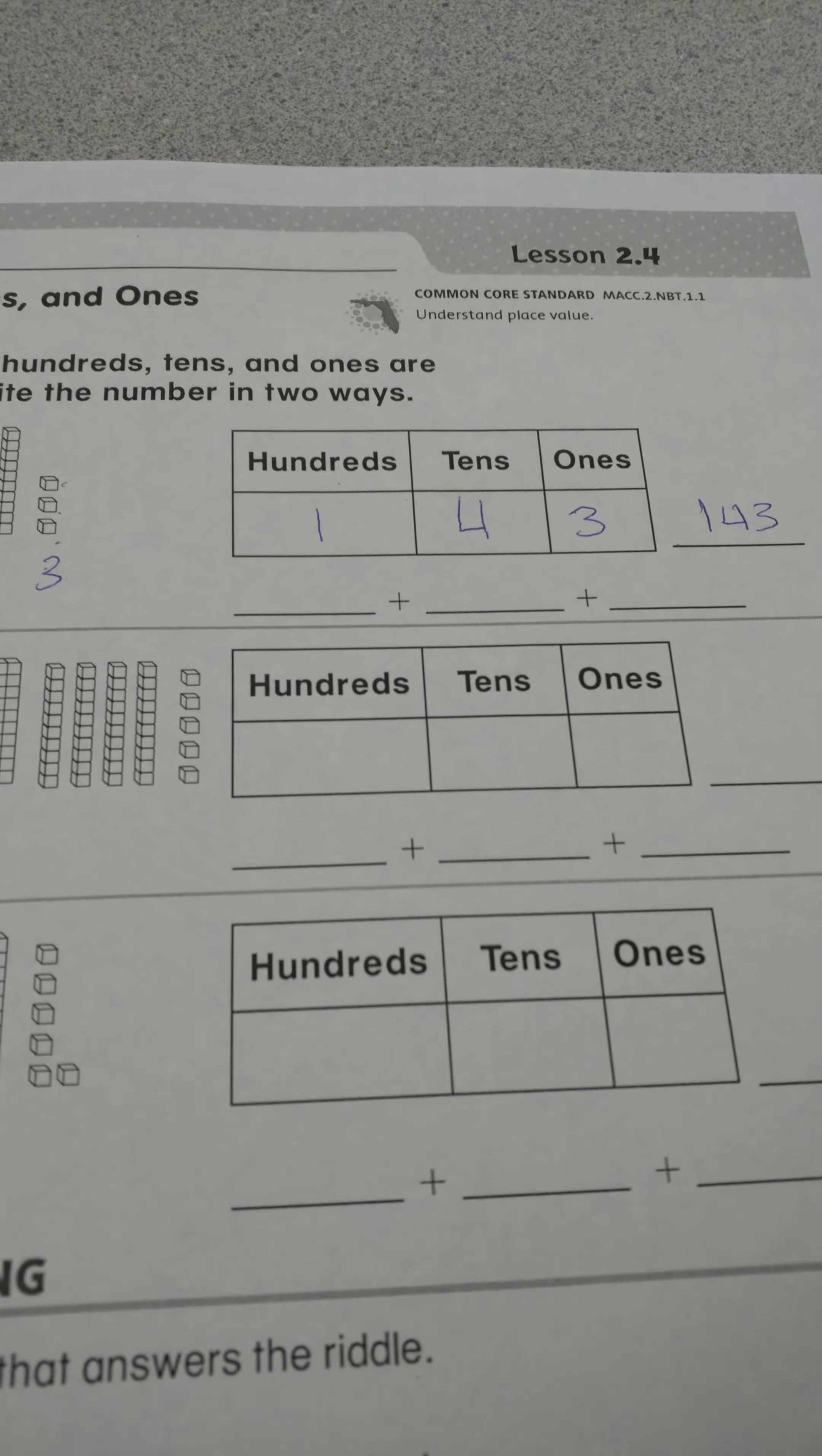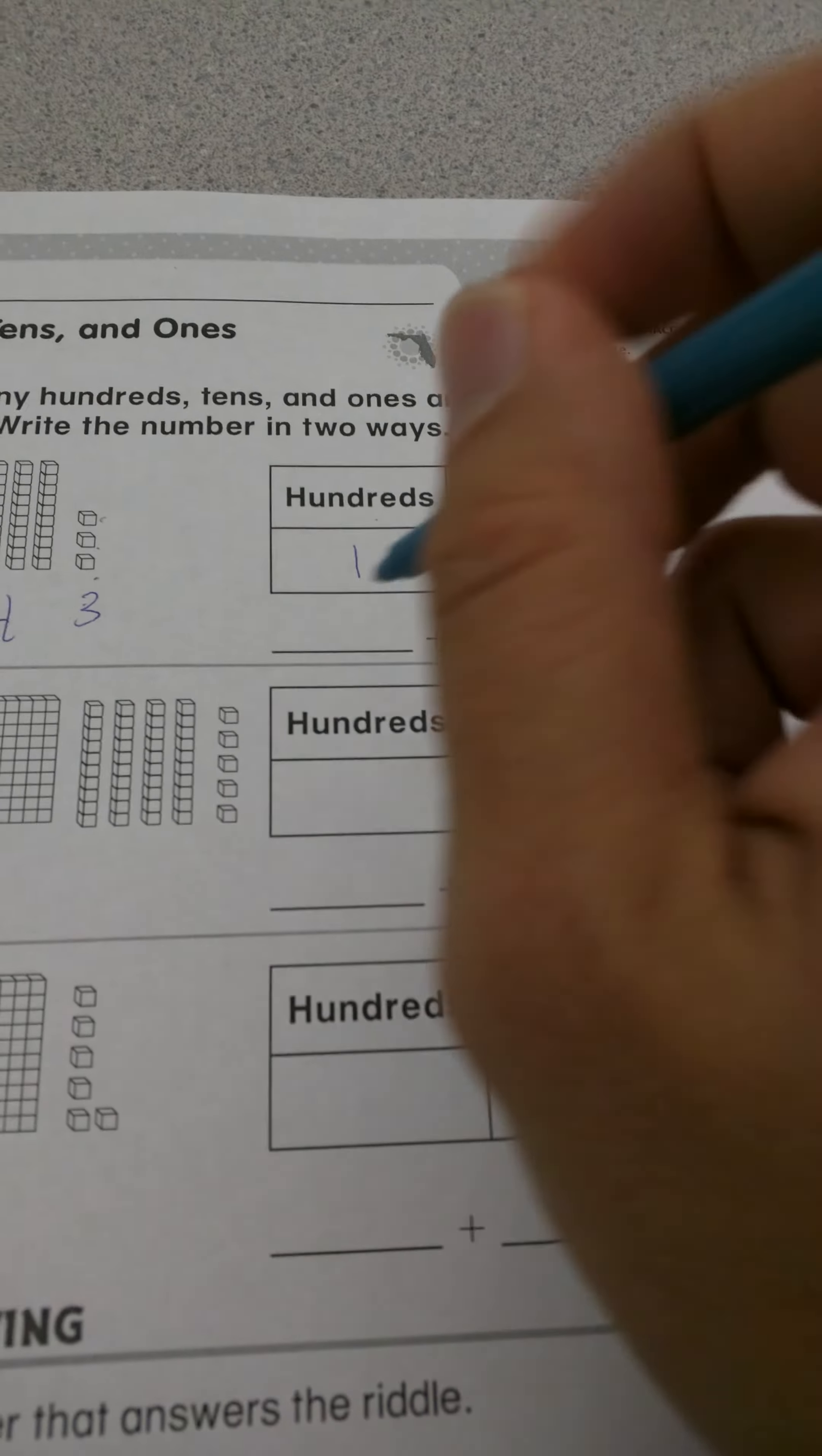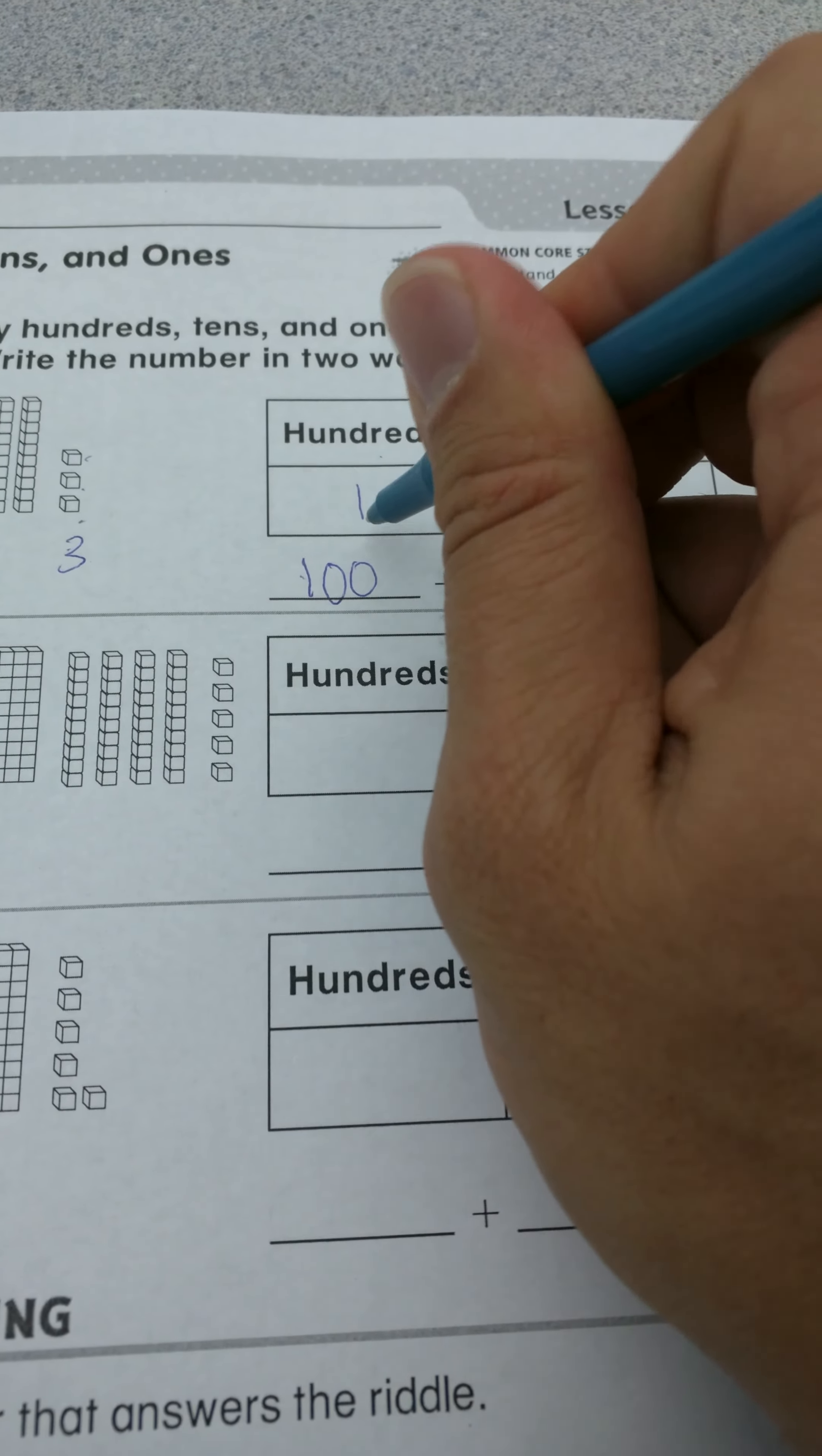So we're going to say expanded form, expanded form. We add hundreds, tens, and ones in expanded form. So I'm going to write 100 here, because there is 100.